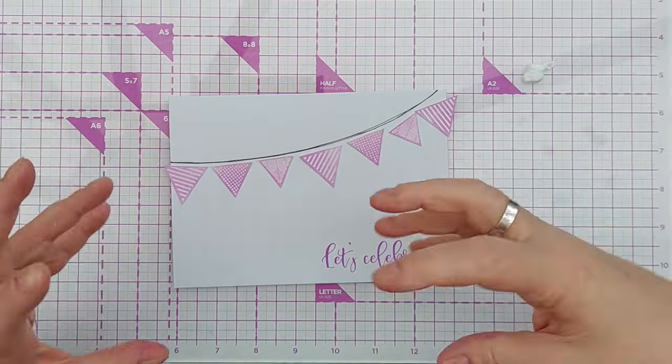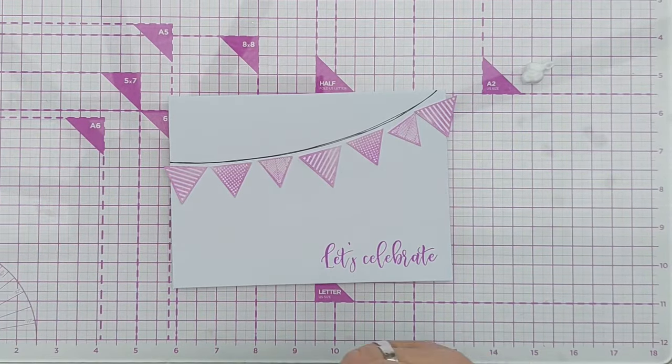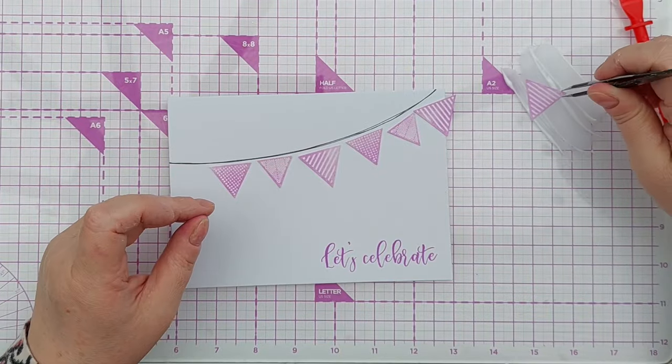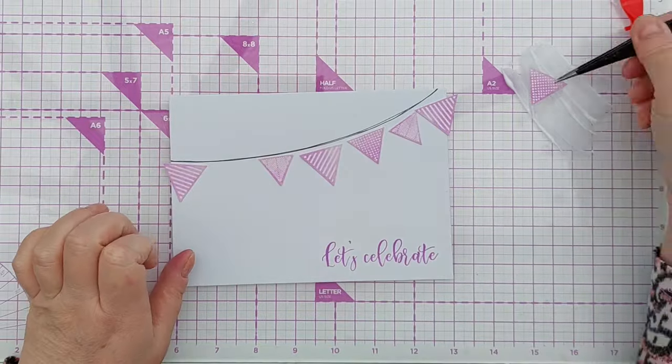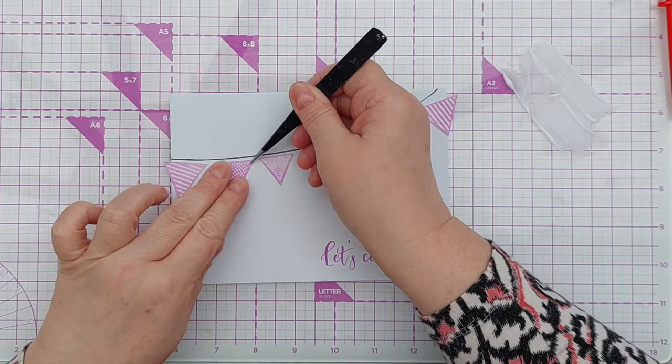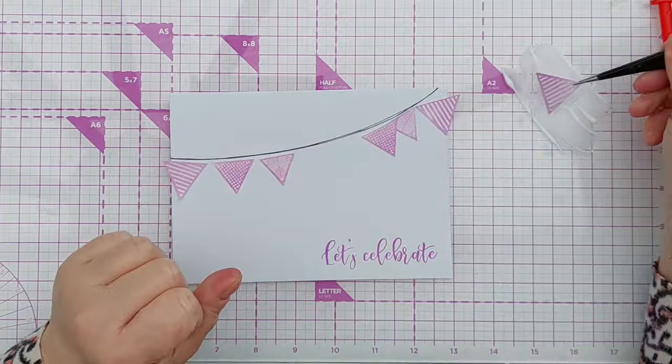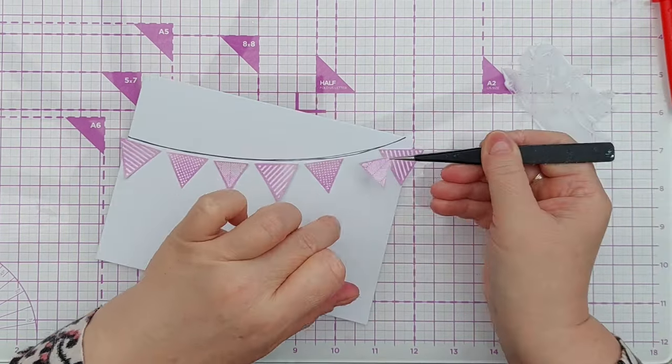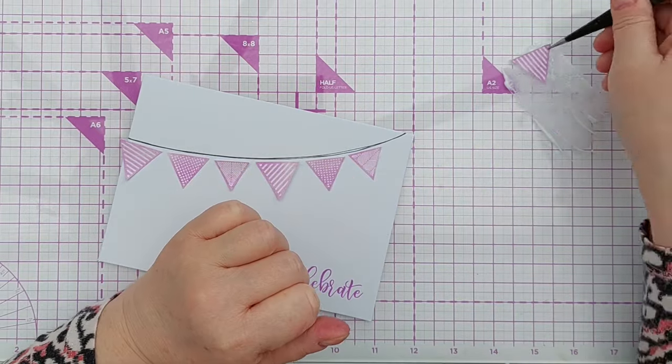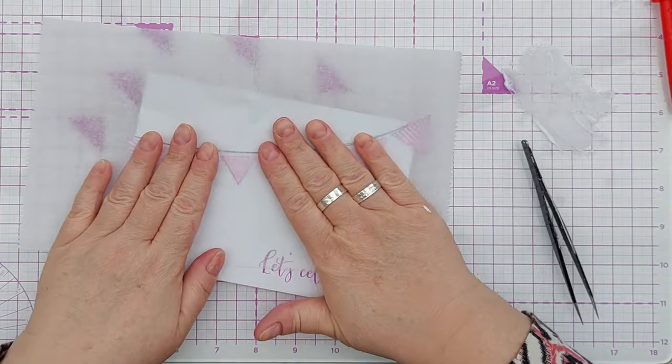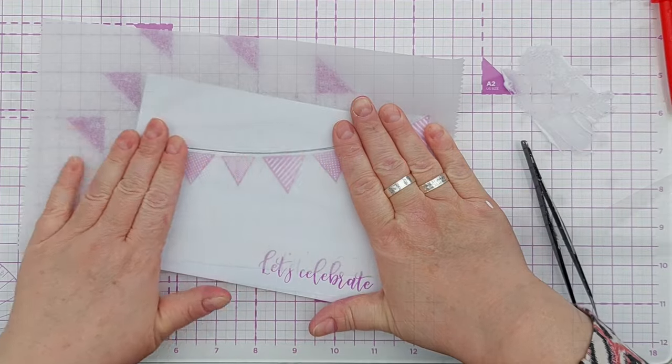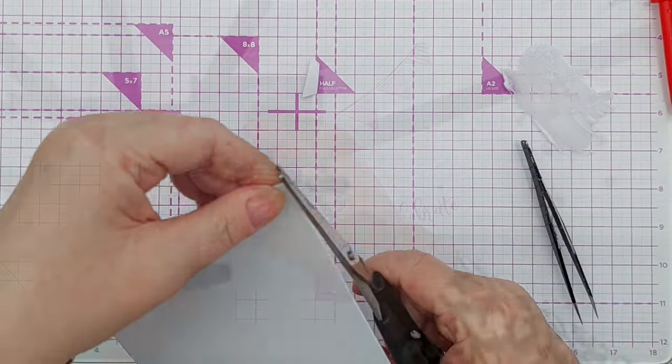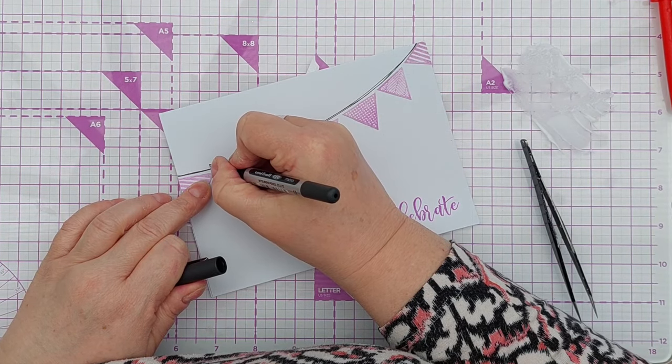You could add a bit of craft foam or a bit of card under each one to give them a bit of extra dimension if you wanted. I think I'm just going to go straight onto the card. I shall press those down with a bit of deli paper just to keep everything clean, and I can trim off the excess. I can attach my flags with a little doodled bow.